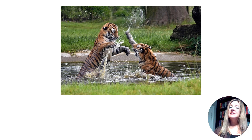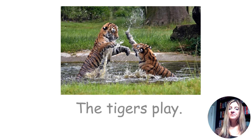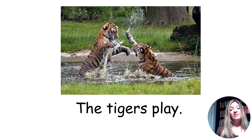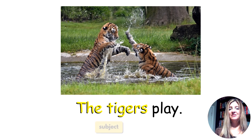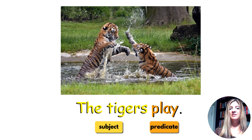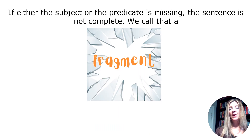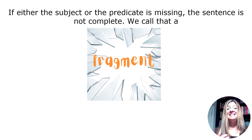Give me a sentence, as simple as you can, about what's happening in this picture. Let's be positive: 'the Tigers play.' Who plays? The Tigers — subject. What do the Tigers do? Play — predicate. Let's make sure this is a complete sentence. Does it have a capital? Does it have a subject? Does it have a predicate? Does it have an end mark? Okay. What happens if we write a sentence that does not have a subject or does not have a predicate? We call that a fragment.